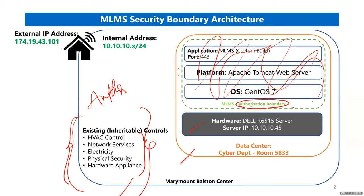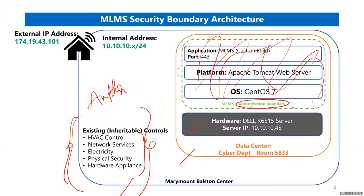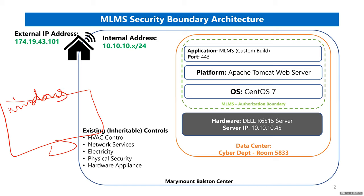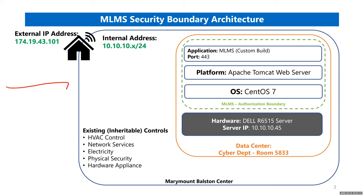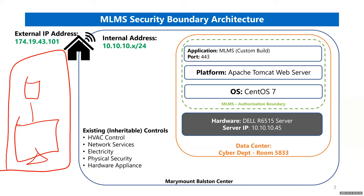You can choose a simple system. For example: you have one Windows 10 computer at home, a router, and the only thing in scope is configuring a password. That would mean your authorization boundary is limited to password configuration. Or, like one student who sells cupcakes, you could stand up a website — come up with a system name, acronym, and design your boundary.